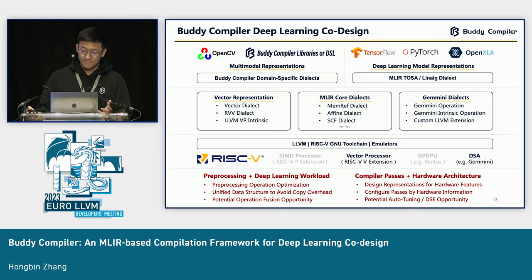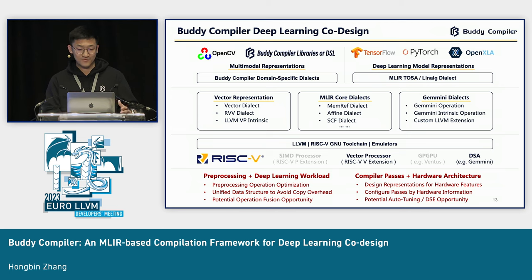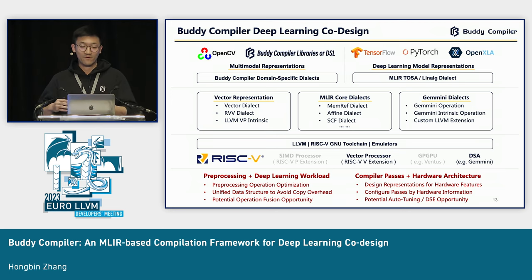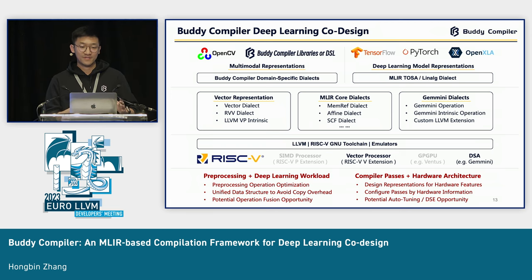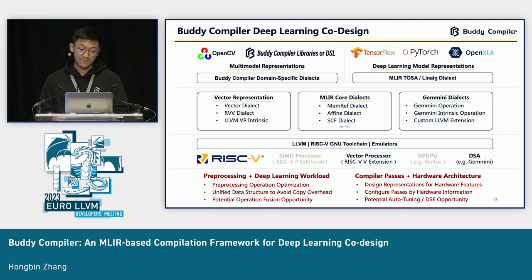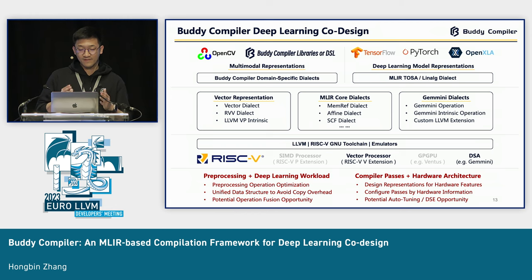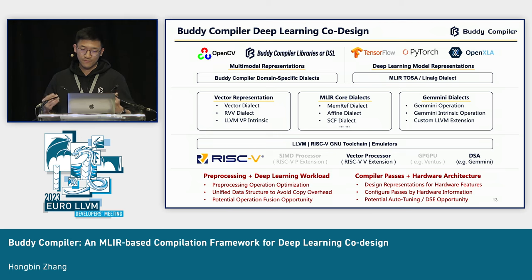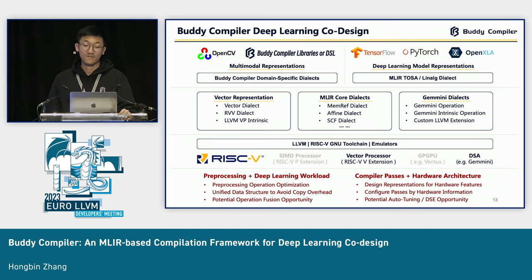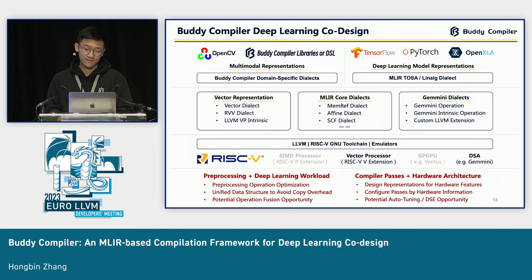The second co-design point is compiler passes and hardware architecture co-design. We can design representations that capture hardware features — for example, adding information or operands for RVV or Gemini. We configure compiler passes based on hardware information, since different hardware implementations use different vector lane widths and register configurations. We can configure our compiler paths to best fit each hardware design, and there are also potential auto-tuning and design space exploration opportunities when considering both compiler processes and hardware architecture together.